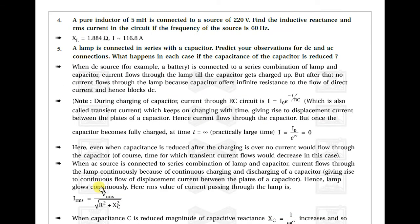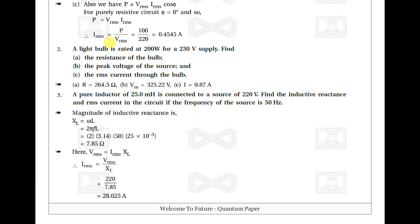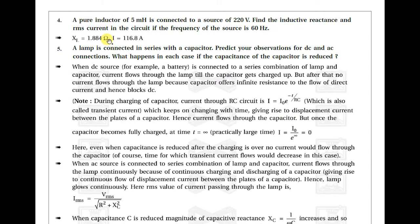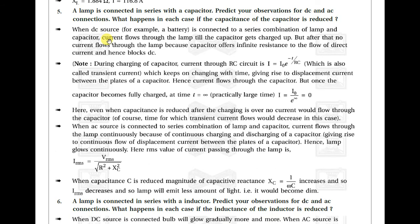Another example: an inductor connected to a 220 volt source with frequency 60 Hz. Find the inductive reactance and RMS current. Use XL = ωL = 2πfL, and then Vrms = Irms × XL to find the current. You can do this one by yourself.